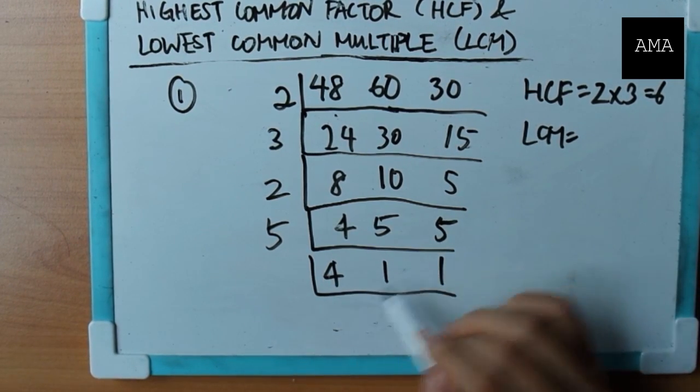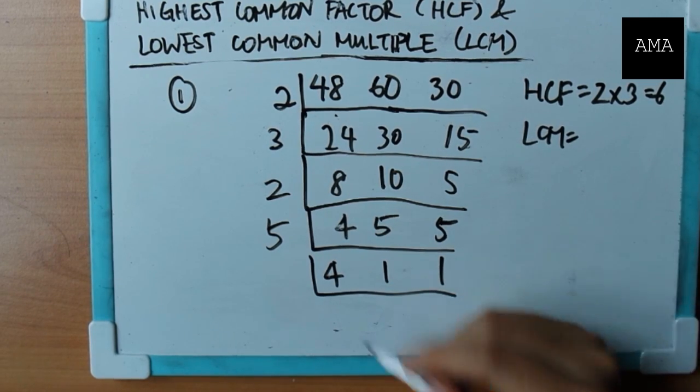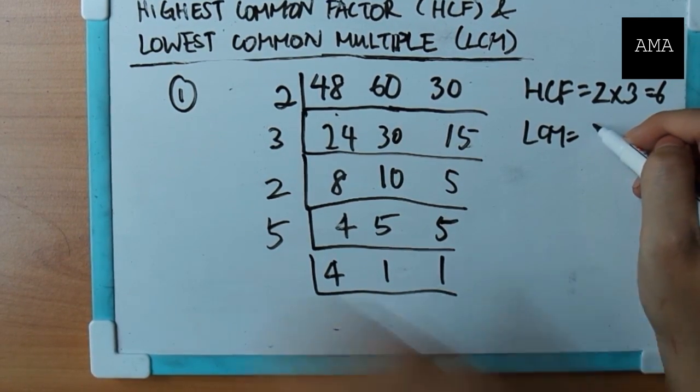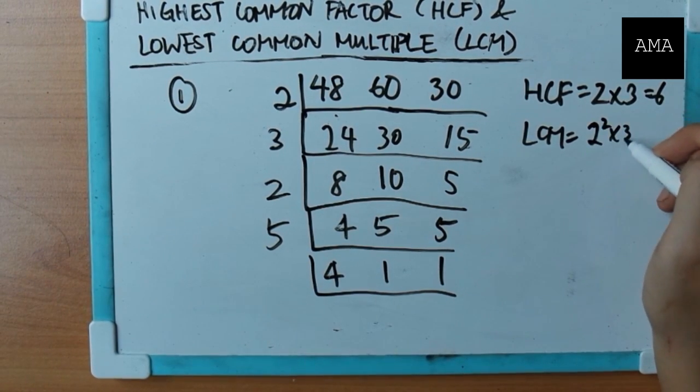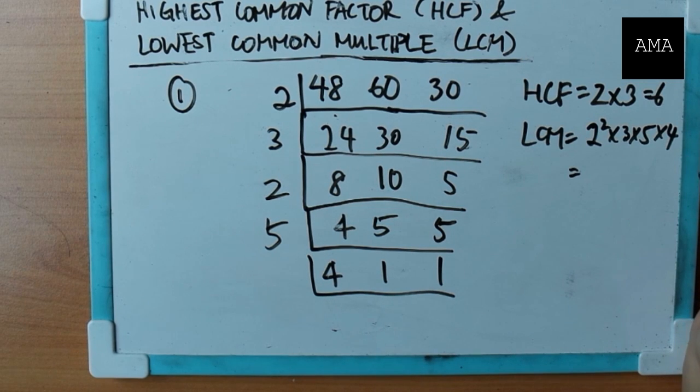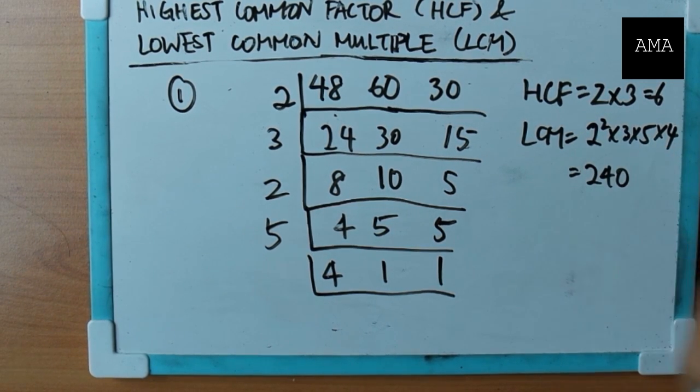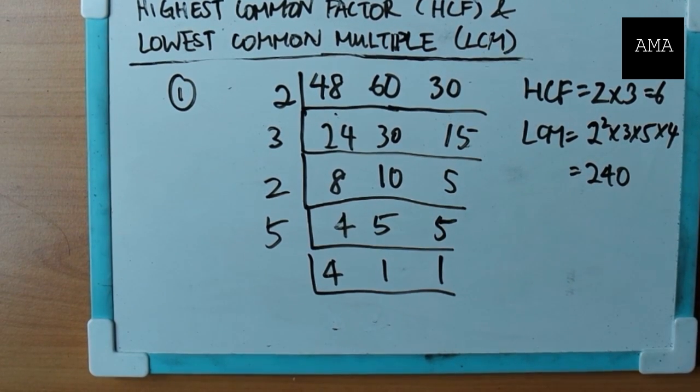Now here, I've reached the end because I can no longer divide any two numbers, right? So LCM is just the product of these numbers here. Two squared times three times five times four. Which you should find if you press into calculator, you should get 240. Again, okay? So this is how you use this method.